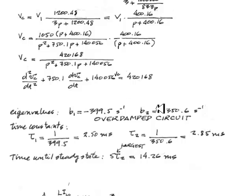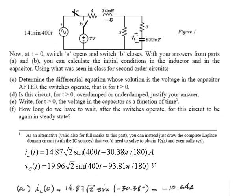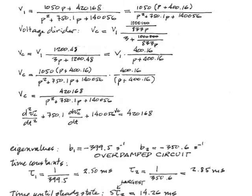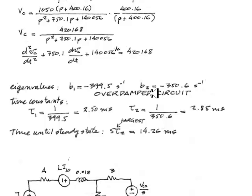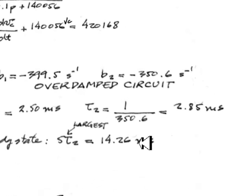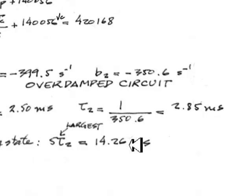The next part. How long do we have to wait after the switches operate for the circuit to reach steady state again? Observe I'm skipping part E for the end out of convenience. Well, once we have those eigenvalues, we can find a time constant associated with each one of them. One of the time constants is 2.5 milliseconds, the other is 2.85 milliseconds. The largest of the two multiplied times 5 gives us the time we need to wait for the circuit to be in steady state again, 14.26 milliseconds.